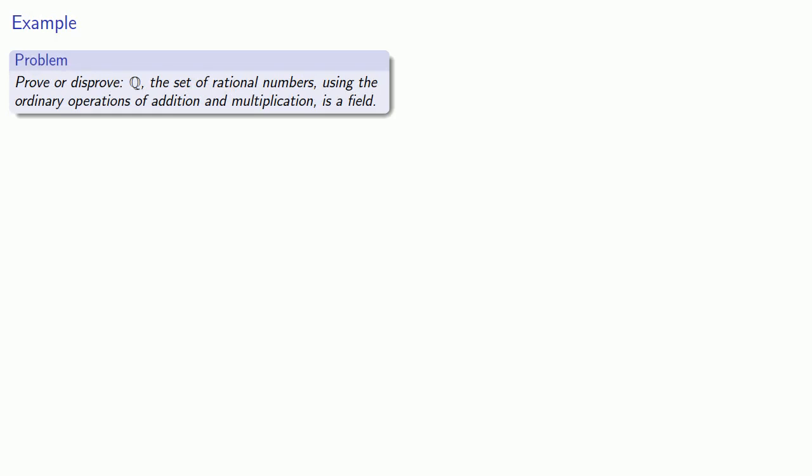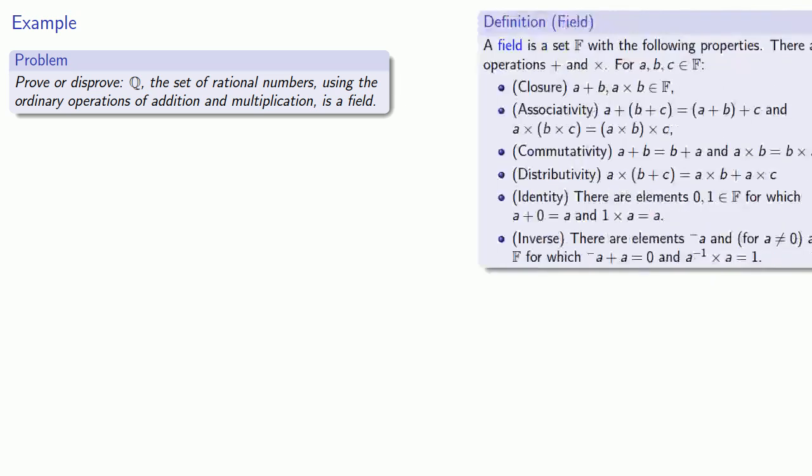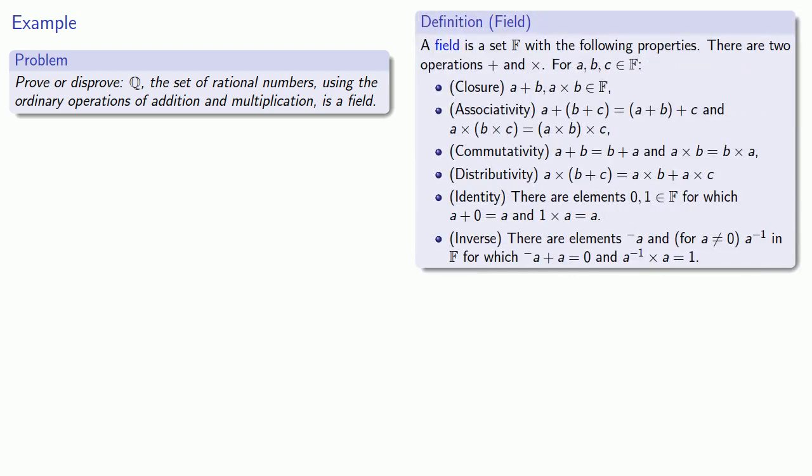So let's try to prove, or possibly disprove, that Q, the set of rational numbers using the ordinary operations of addition and multiplication, is a field. It's important to emphasize that you cannot prove a statement by giving examples, but you can use the examples to help guide your thinking. So let's take three elements of our set. How about three-fifths, one-fifth, and two-thirds.